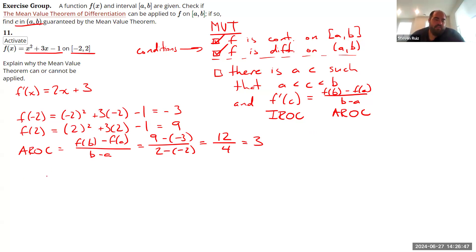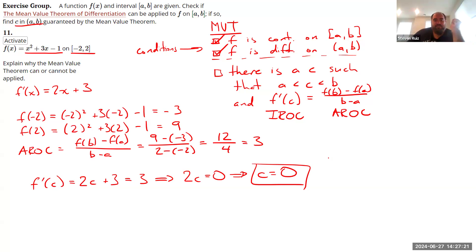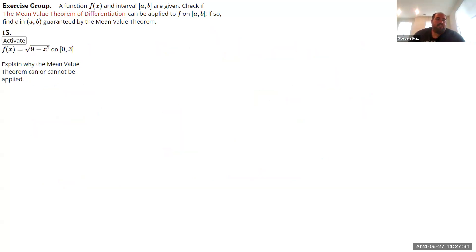The average rate of change is 3, so the Mean Value Theorem guarantees at least one point where the derivative equals 3. We have f'(c) = 2c + 3, and setting that equal to 3 gives 2c = 0, so c = 0. The slope of the secant line over this interval is 3, and there is a point where the derivative equals 3 — that's at x = 0.